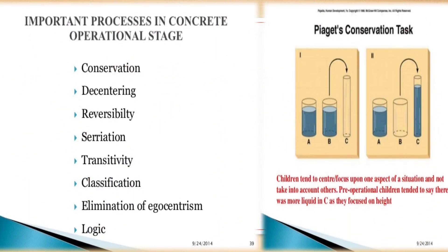In the Concrete Operational stage, children develop conservation, de-centering, reversibility, and transitivity. They are able to classify things and eliminate egocentric beliefs. They can perceive different features of objects — for example, distinguishing a square from a triangle. They can perform reversible operations — for example, understanding that 8+5=13 and also 5+8=13, and 13−5=8. They can arrange objects according to height, weight, and size.